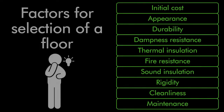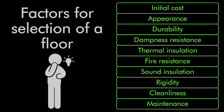We are going to discuss what are the factors that we should consider while finalizing a floor and floor covering for our building or structure. The various parameters are initial cost, appearance, durability, resistance against dampness, insulation against heat, fire resistance, noise insulation, rigidity, and cleanliness and maintenance. Let's discuss all these parameters one by one in detail.